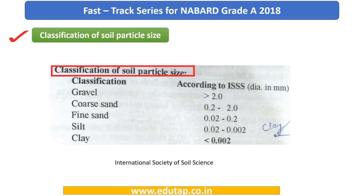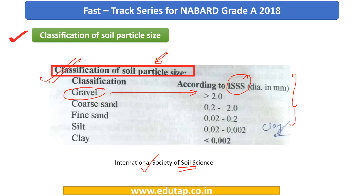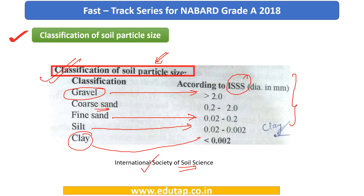Next is an important classification of soil particle size, given by the International Society of Soil Science (ISSS). Gravel has a particle size greater than 2 mm in diameter. Coarse sand is between 0.2 to 2 mm; fine sand from 0.02 to 0.2 mm; silt between 0.02 to 0.002 mm; and clay is less than 0.002 mm in diameter. All measurements are in millimeters. Kindly pause the video and memorize these.